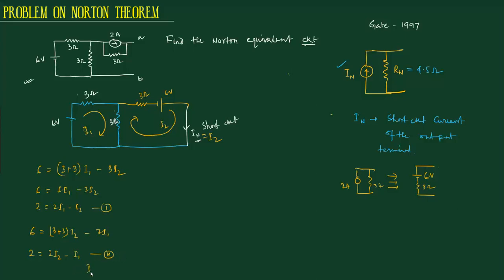From equation 2, I1 equals 2I2 minus 2. Substituting in equation 1: 2 equals 2 times (2I2 minus 2) minus I2, so 2 equals 4I2 minus 4 minus I2, which gives 6 equals 3I2. Therefore I2 equals 6 by 3, equals 2 ampere. So the short circuit current In equals 2 ampere.